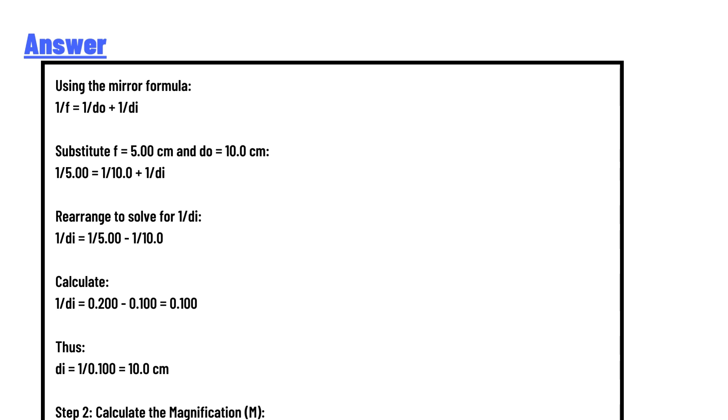Calculation: 1/5 = 1/10 + 1/di. Rearranging to solve for 1/di: 1/di = 1/5 - 1/10. Calculate: 1/di = 0.2 - 0.1 = 0.1. Thus, di = 1/0.1 = 10 cm.